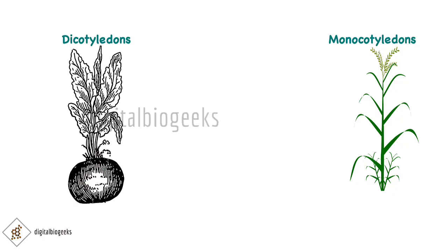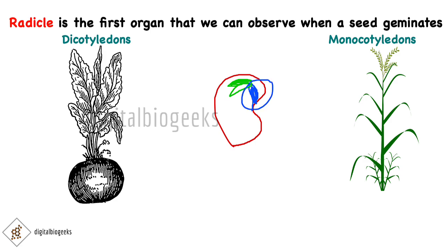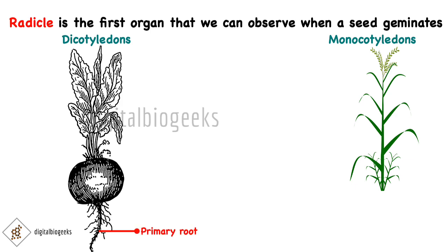The primary root or radicle is the first organ that we can observe when a seed germinates. This is a seed — here this one is the radicle and this one is the plumule. The radicle develops into the root system and the plumule develops into the shoot system. When a seed germinates, the first organ we can observe is the radicle. In dicotyledons, the radicle directly elongates into the soil and forms the root system.